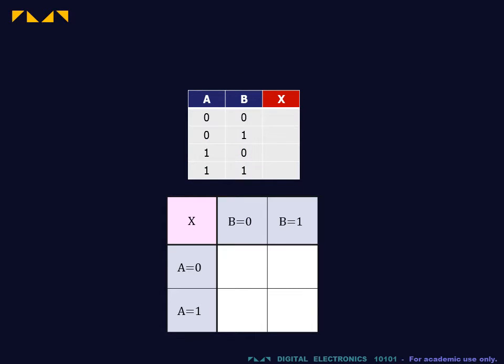We can bring together these rows, now thought of as cells, if we rearrange the truth table into a two-dimensional map called the Karnaugh map.